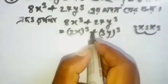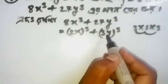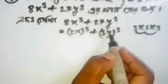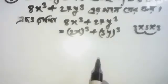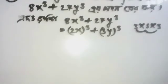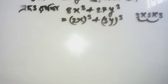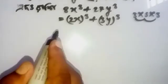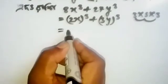The formula we want to use is the cube formula: a plus b whole cube minus 3 into a b into a plus b.